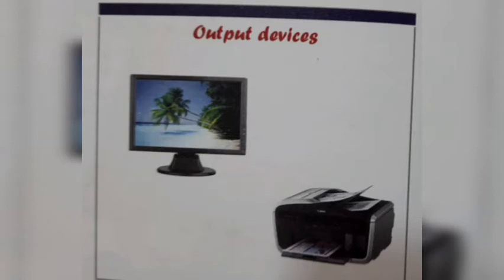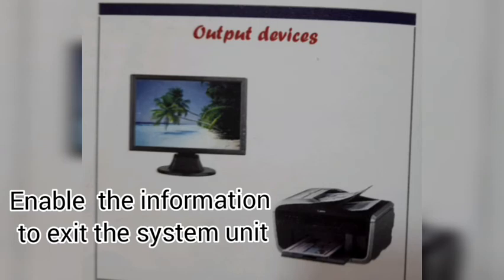These are the output devices — screen and printer. Output devices enable the information to exit the system unit. The computer gives us our output through the screen — that is why the screen is called an output device. And the printer — we can print a paper from the computer, we can get a paper from the computer, so the printer is also an output device.